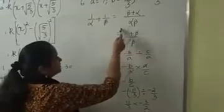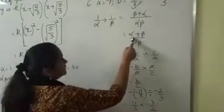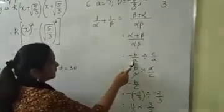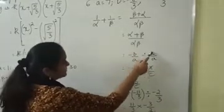And now in a quadratic polynomial, what is the sum of the zeros? What is alpha plus beta? Minus b by a. Divided by, what is alpha beta? c by a.